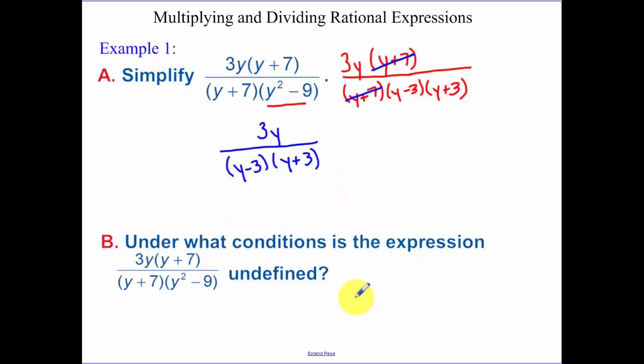So now part B, under what conditions is the expression undefined? It's any time the bottom of the original, or the denominator of the original before you factored anything, before you even canceled. You can look at this factored piece there and set each one of those quantities equal to zero. So y cannot be equal to negative 7, 3, and negative 3.